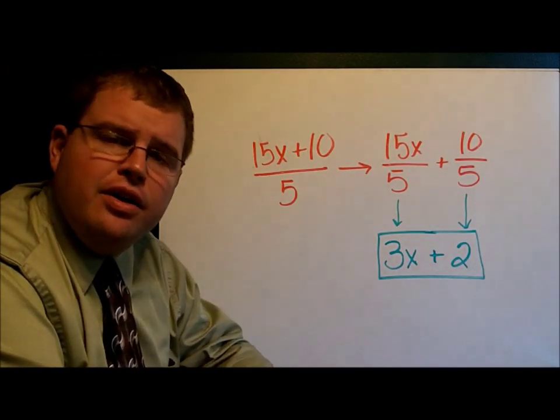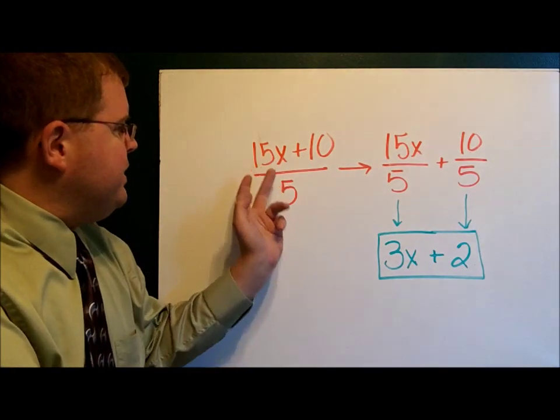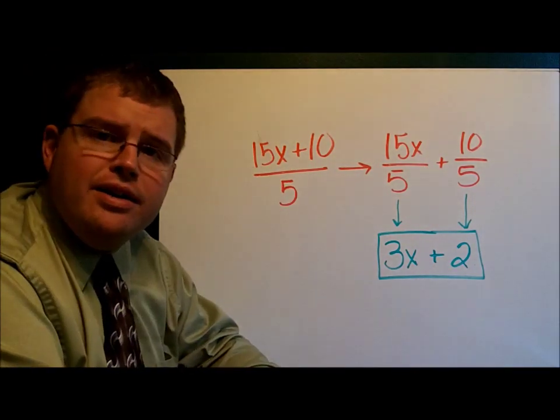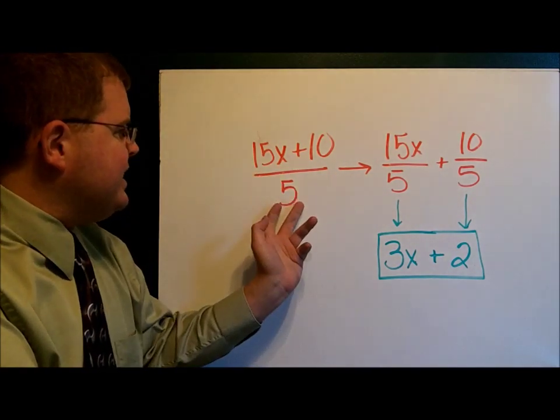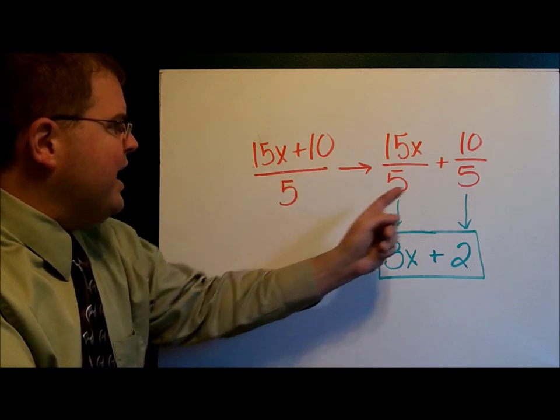15x plus 10 over 5. You know that this means both of these pieces here are being divided by 5. So we have 15x divided by 5 plus 10 divided by 5.